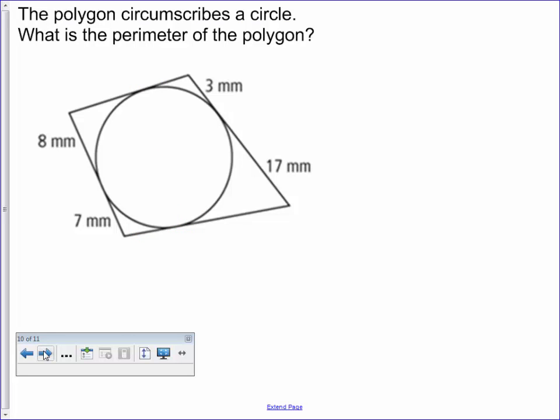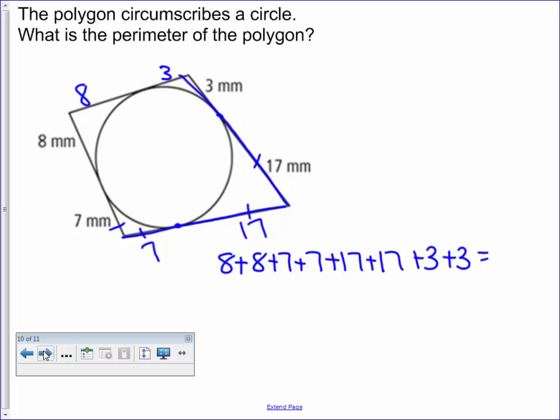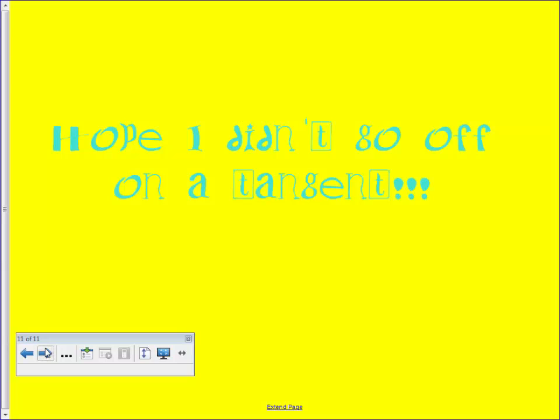Last problem says, what is the perimeter of this polygon? It is touching the circle at one point, each line. So these are all tangent lines. So remember, what we just did, these are going to be equal. So this part down here will be 17. These are going to be equal. That's 7. 8 can come up here. And 3 can come up here. So to find this perimeter, we're just going to add everything up. 8 plus 8 plus 7 plus 7 plus 7 plus 17 plus 17 plus 3 plus 3. All equals the perimeter of this polygon. So recognize that those are common tangents. Thanks for watching.